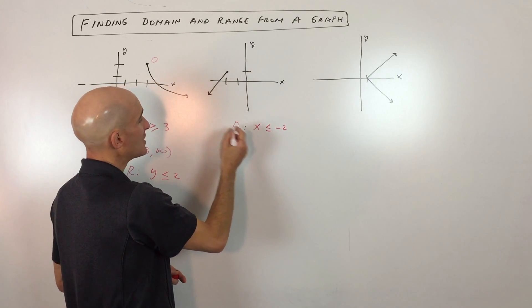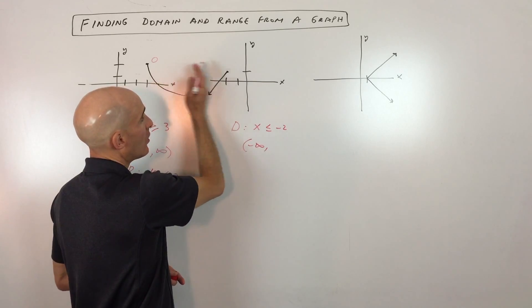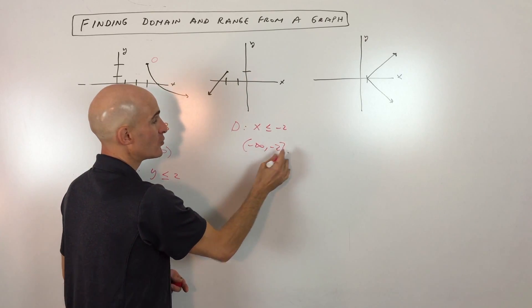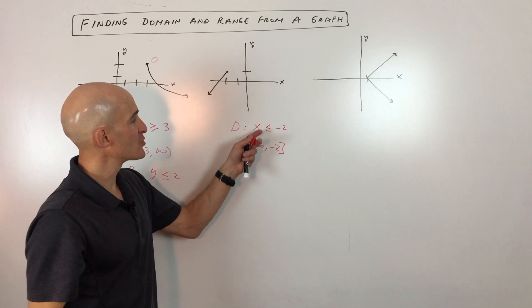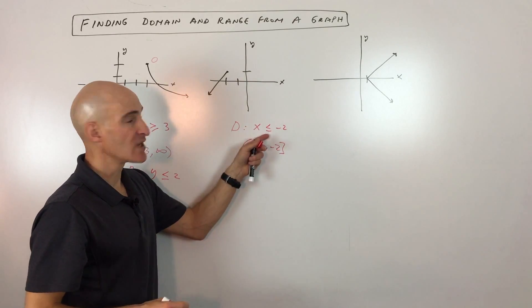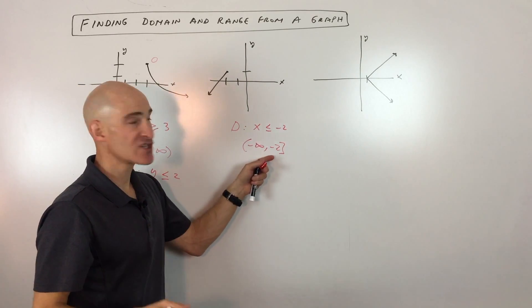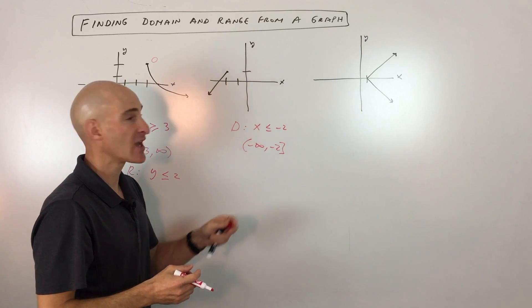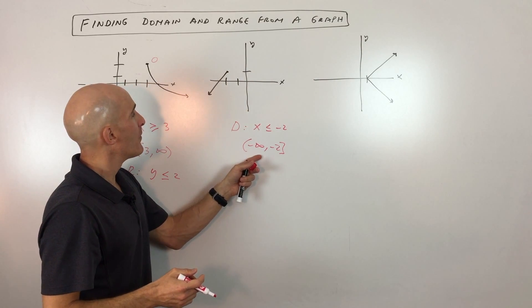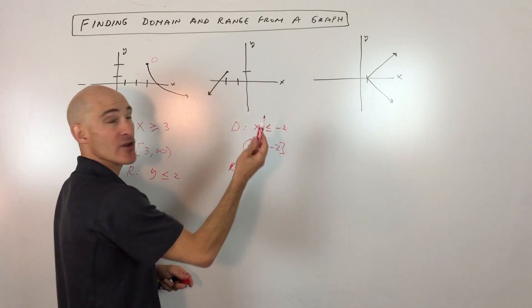So the domain is x ≤ −2. In interval notation, that's from negative infinity up to and including −2. If you want to learn more about interval notation, I have a video on that on my channel, Mario's Math Tutoring.